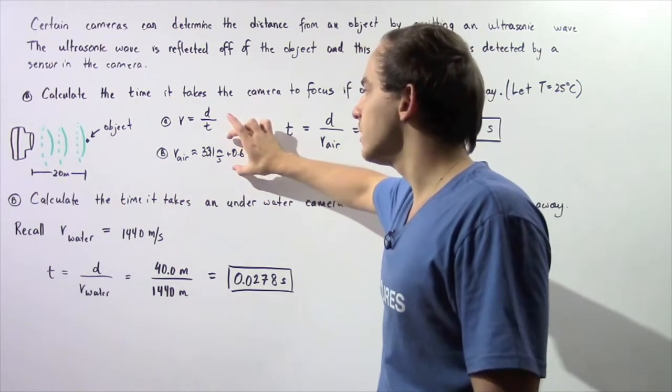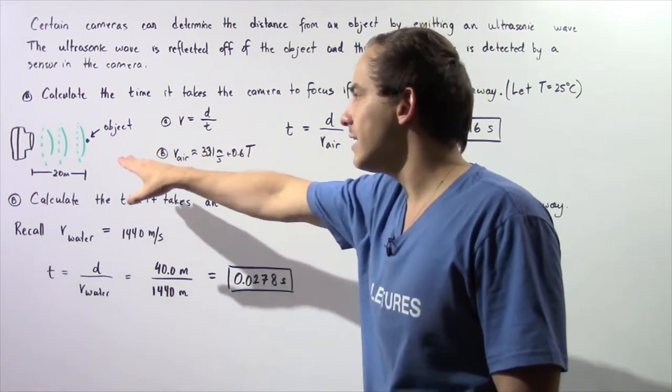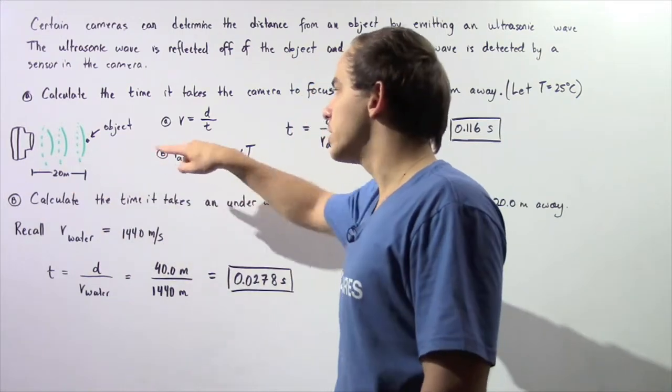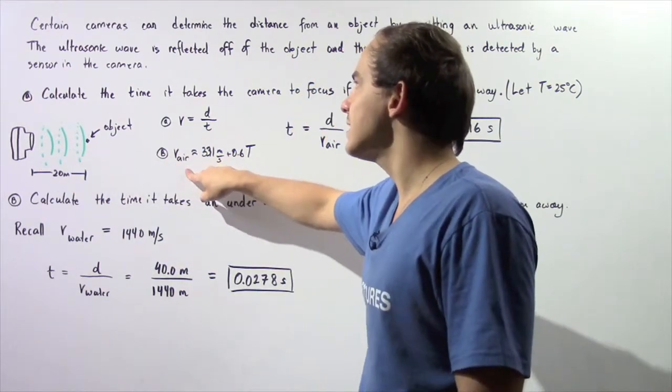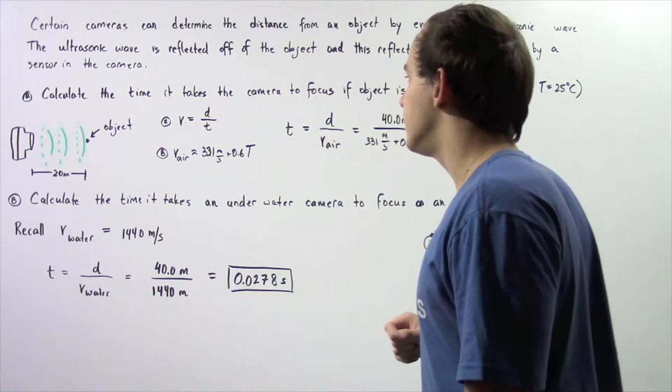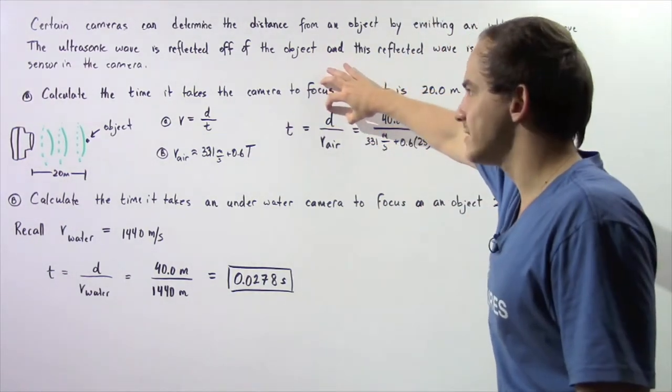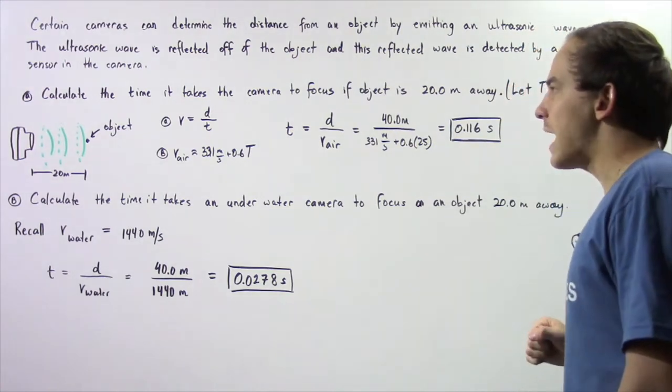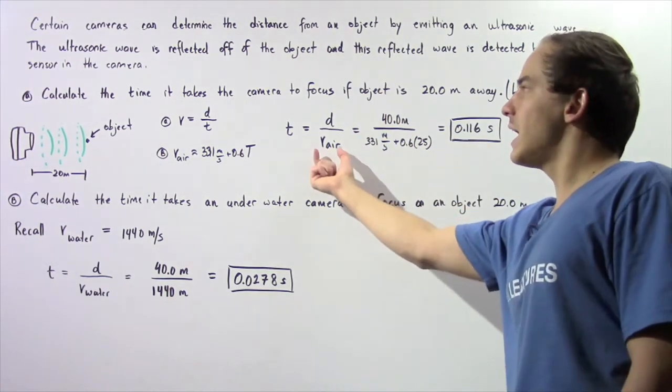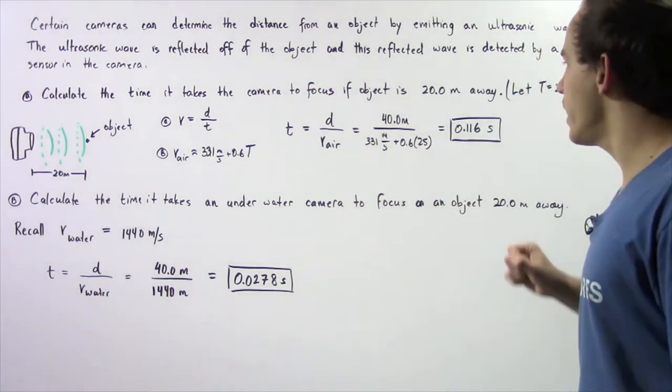This formula gives us the velocity of our propagating wave that is traveling through the air, the velocity of the ultrasound wave. Time is equal to distance our ultrasonic wave travels divided by the velocity of that ultrasonic wave.